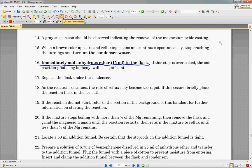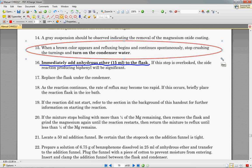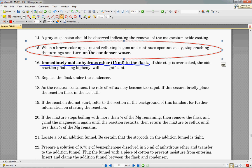So a gray suspension should be observed indicating the removal of the magnesium oxide coating. When you get the magnesium, it's going to have been exposed to air, which is full of oxygen. So there's going to be a nice magnesium oxide coating on the outside. This gray suspension is just that oxide coating coming off. When a brown color appears and refluxing begins and continues spontaneously, which means as soon as your reaction begins to boil and doesn't need any help to continue boiling, stop crushing the turnings and turn on the condenser to the water.